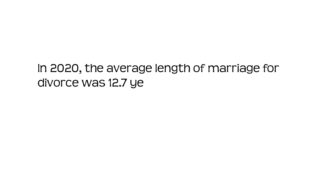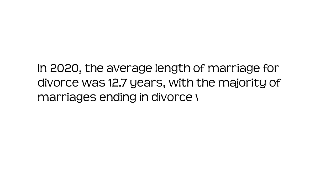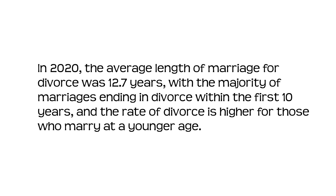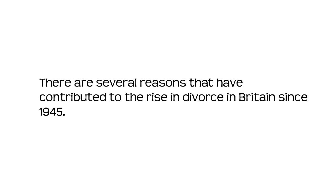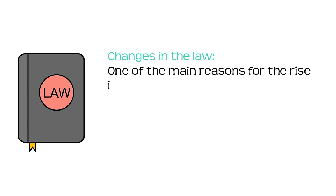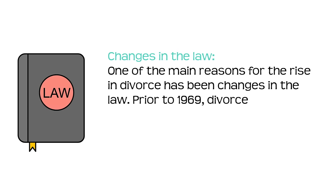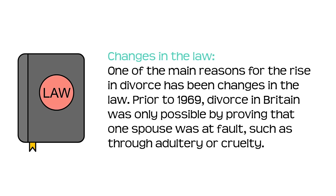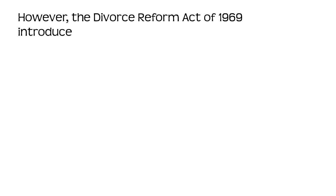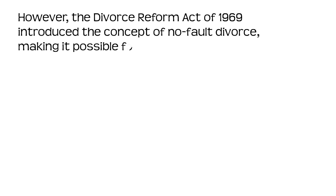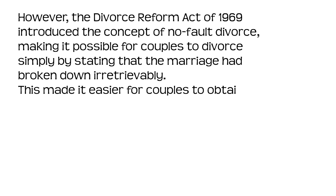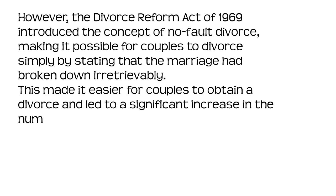In 2020, the average length of marriage for divorce was 12.7 years, with the majority of marriages ending in divorce within the first 10 years, and the rate of divorce is higher for those who marry at a younger age. There are several reasons that have contributed to the rise in divorce in Britain since 1945. Changes in the law: one of the main reasons has been changes in the law. Prior to 1969, divorce in Britain was only possible by proving that one spouse was at fault, such as through adultery or cruelty. However, the Divorce Reform Act of 1969 introduced the concept of no-fault divorce, making it possible for couples to divorce simply by stating that the marriage had broken down irretrievably. This made it easier for couples to obtain a divorce and led to a significant increase in the number of divorce cases.